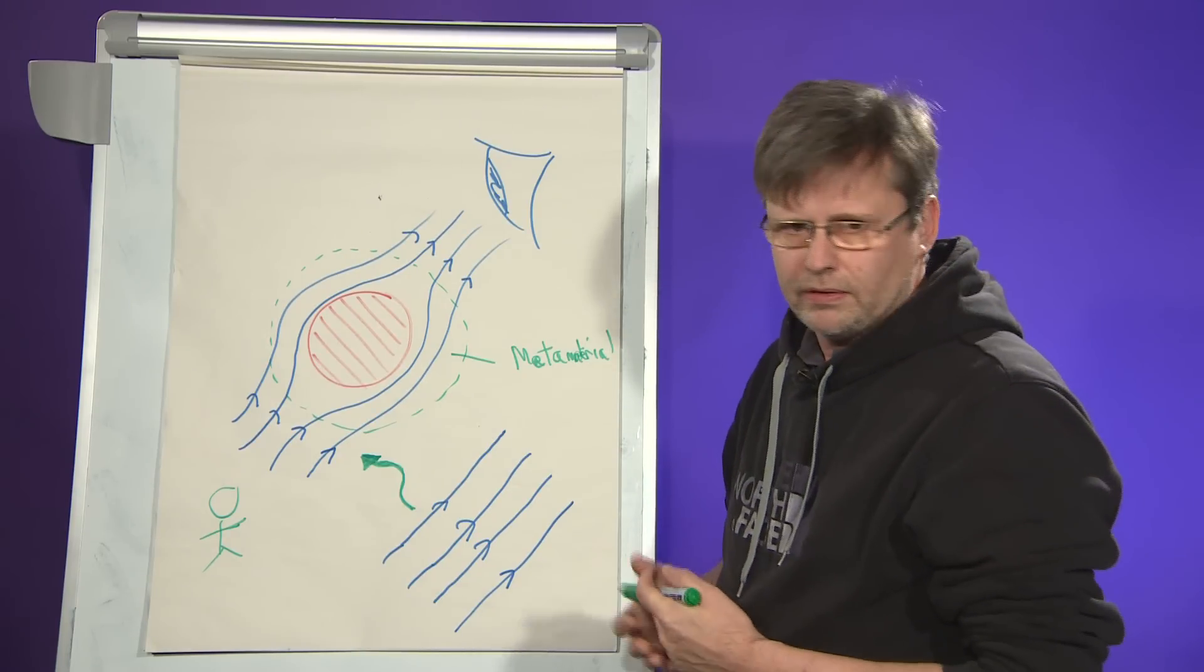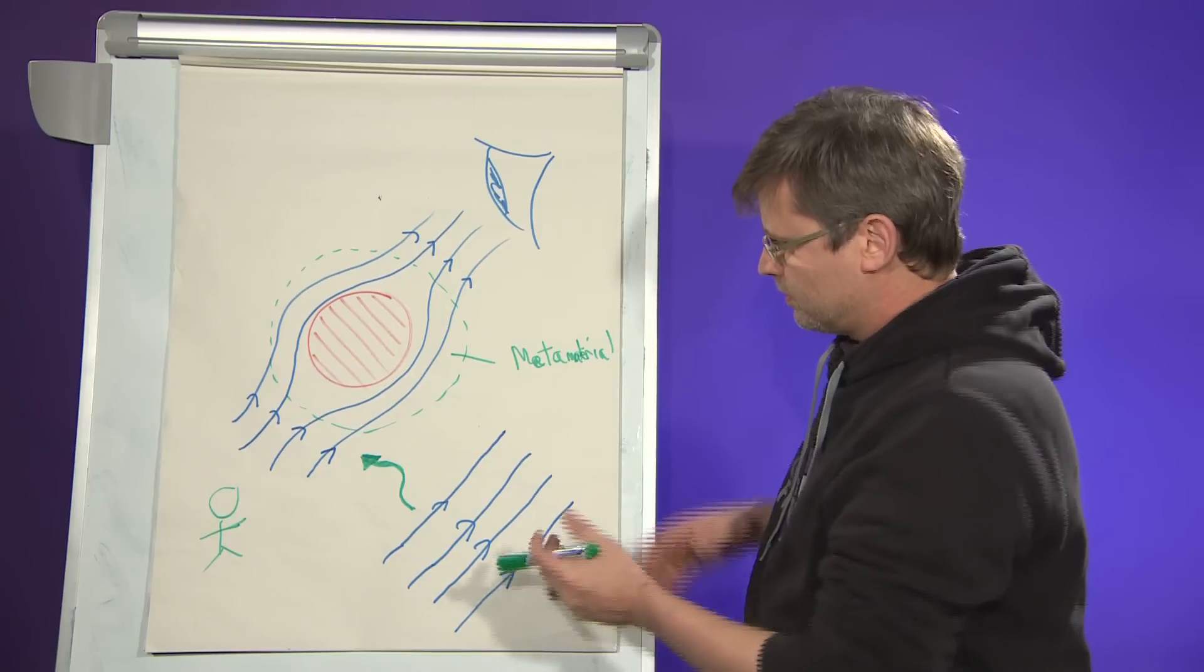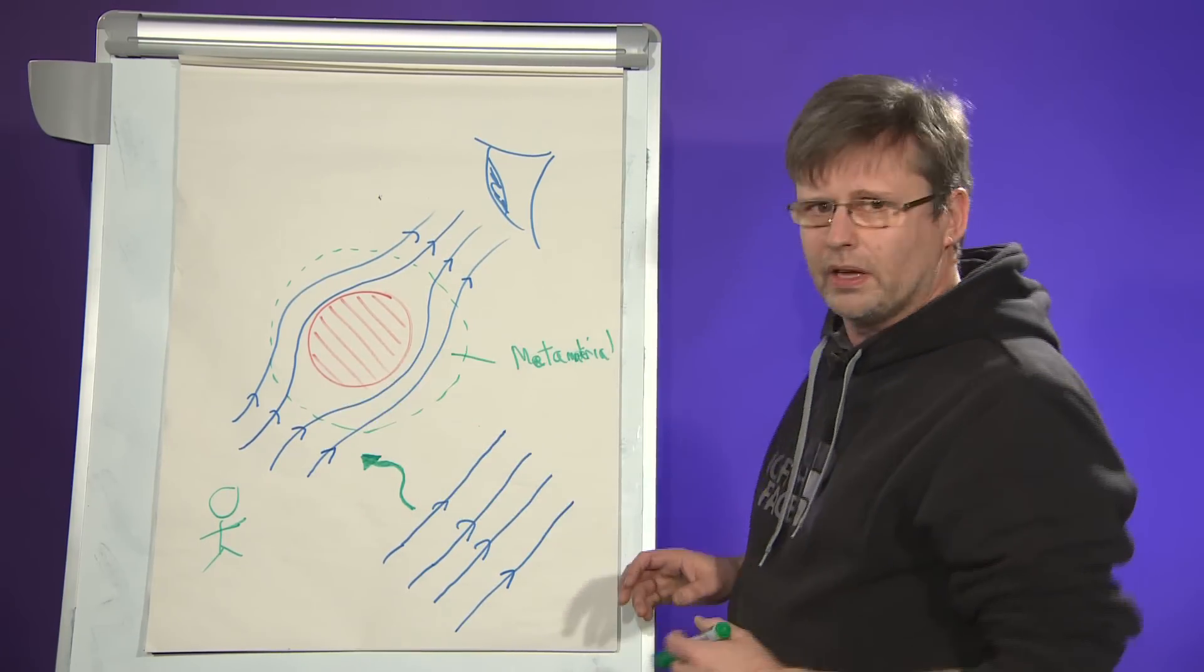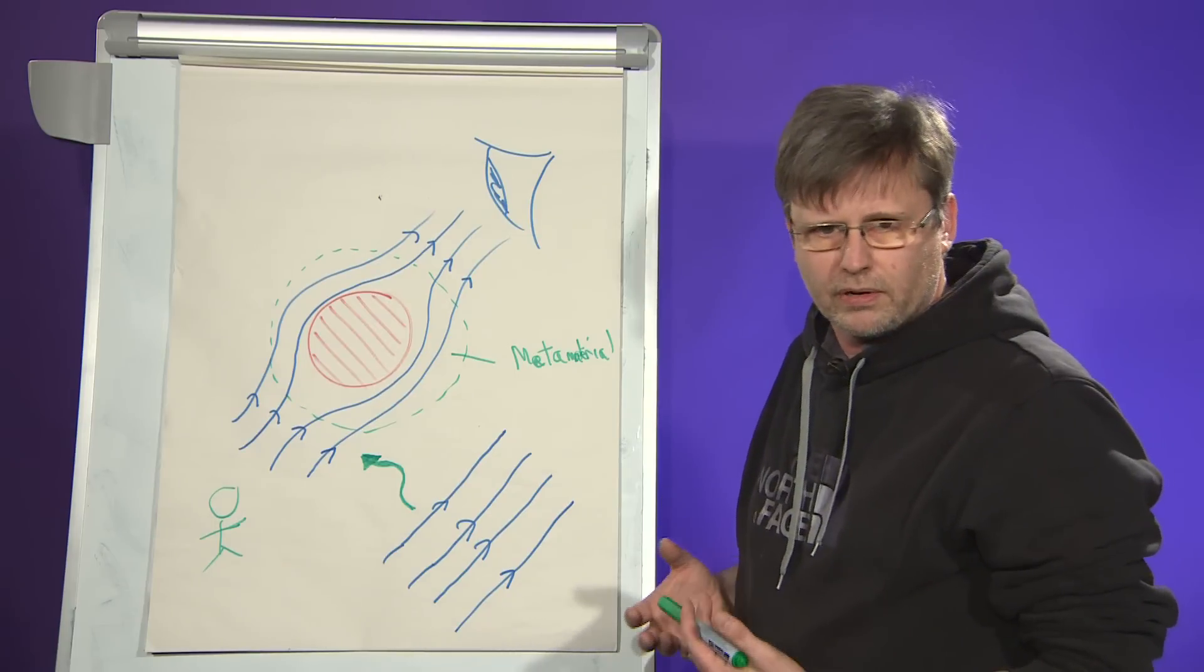The observer sees precisely what is behind the object and the object itself is invisible. What we have discovered in recent times is that it's possible to make this transformation from straight lines into curved lines using materials that don't occur in nature.